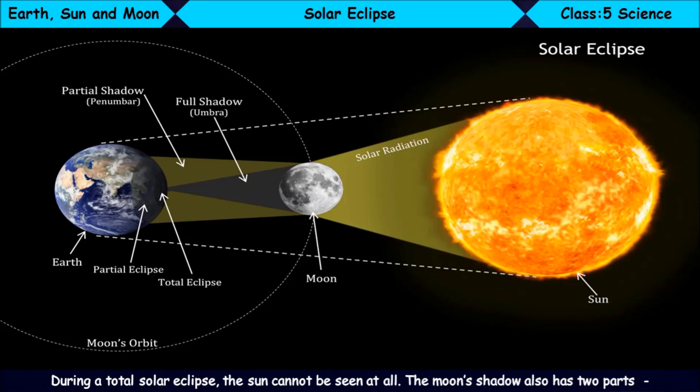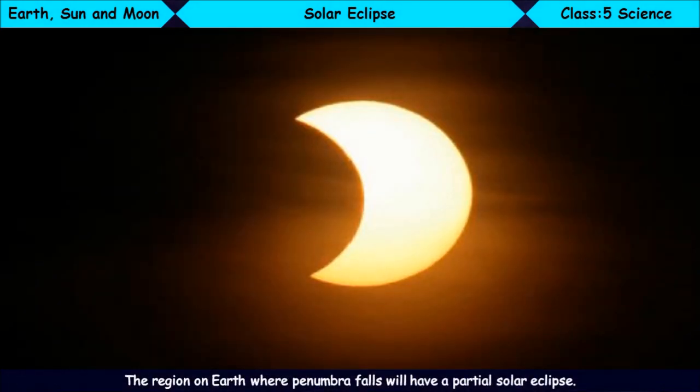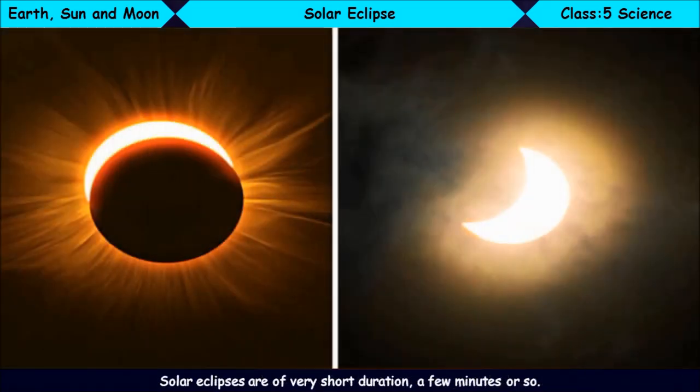The Moon's shadow has two parts, the Umbra and the Penumbra. The region on the Earth where Penumbra falls will have a partial solar eclipse. Solar eclipses are of very short duration, a few minutes or so.